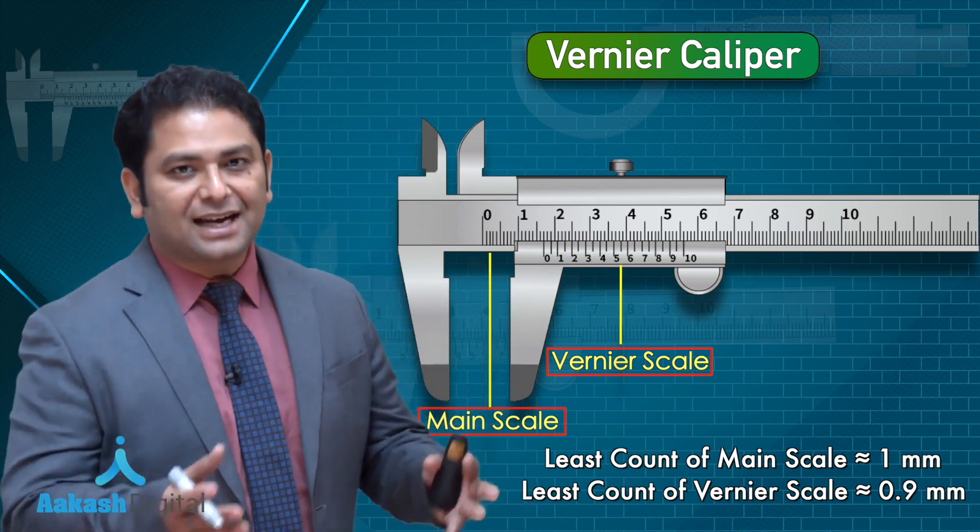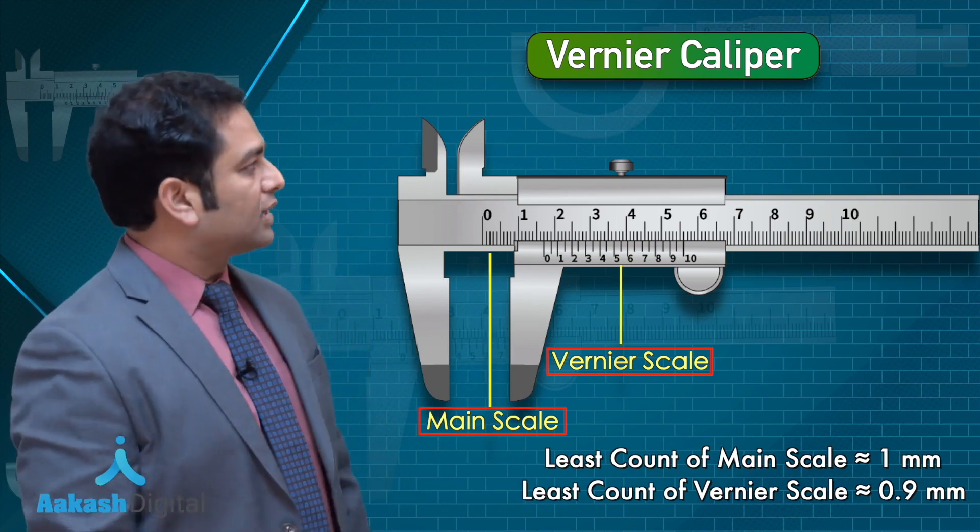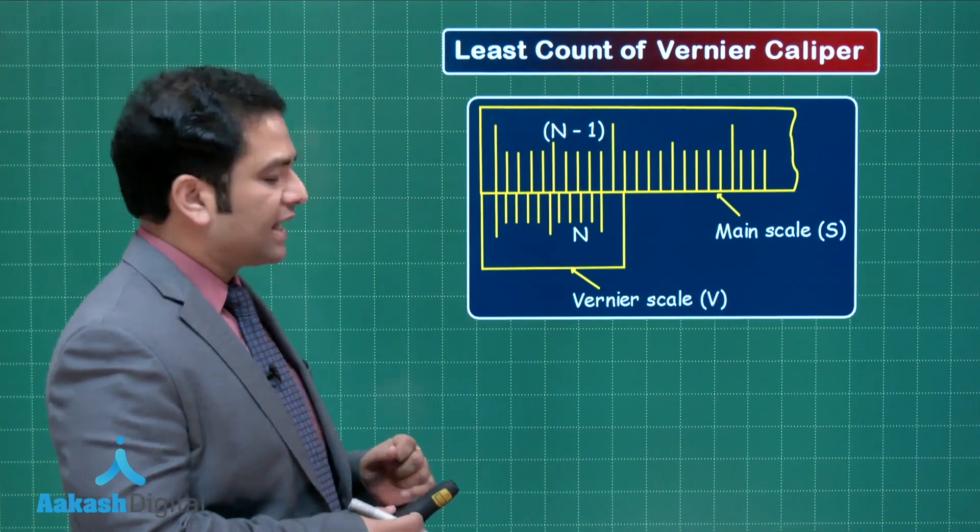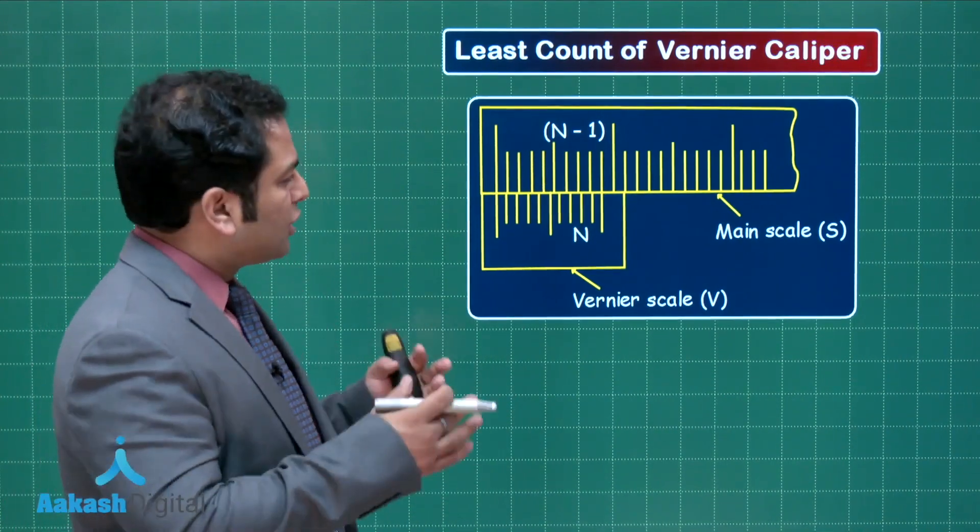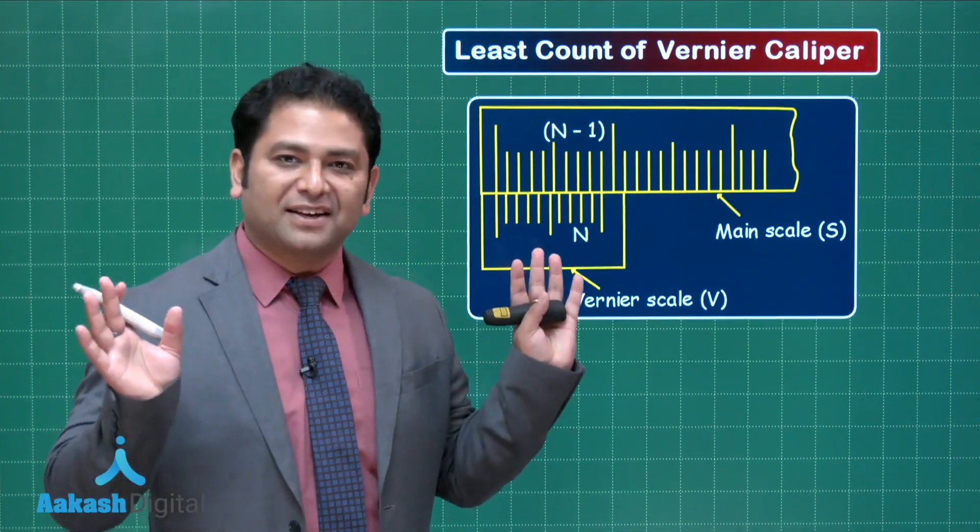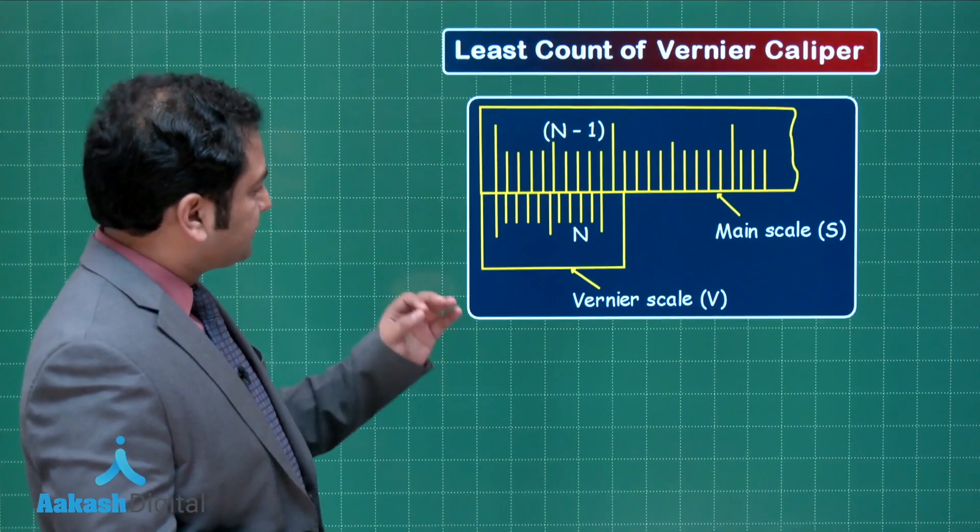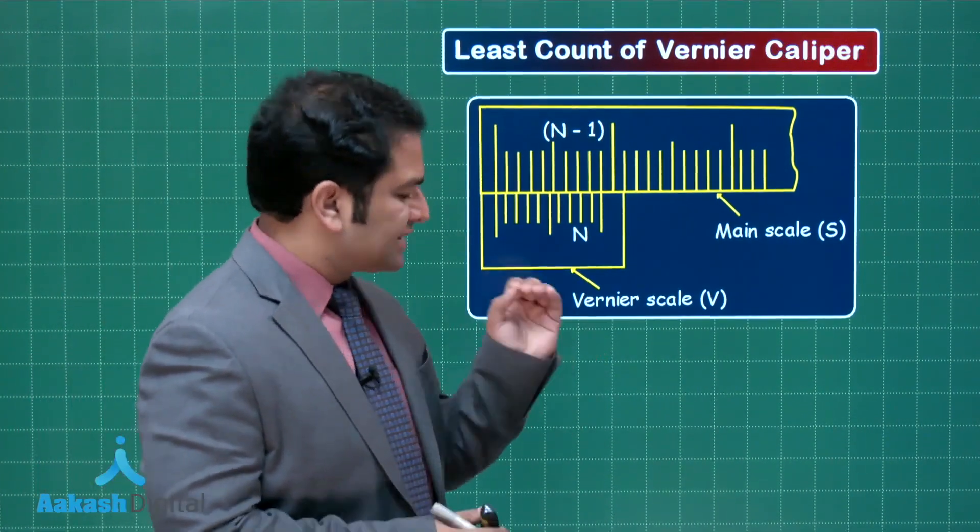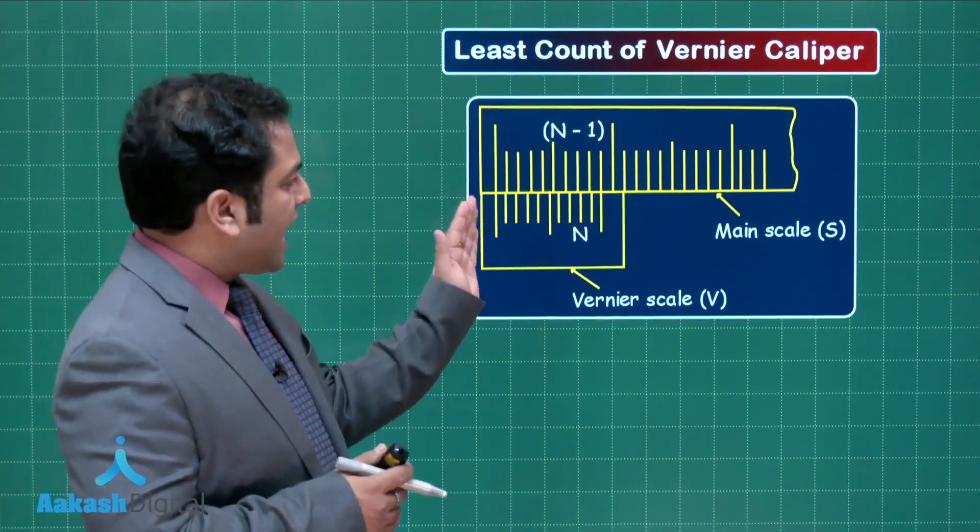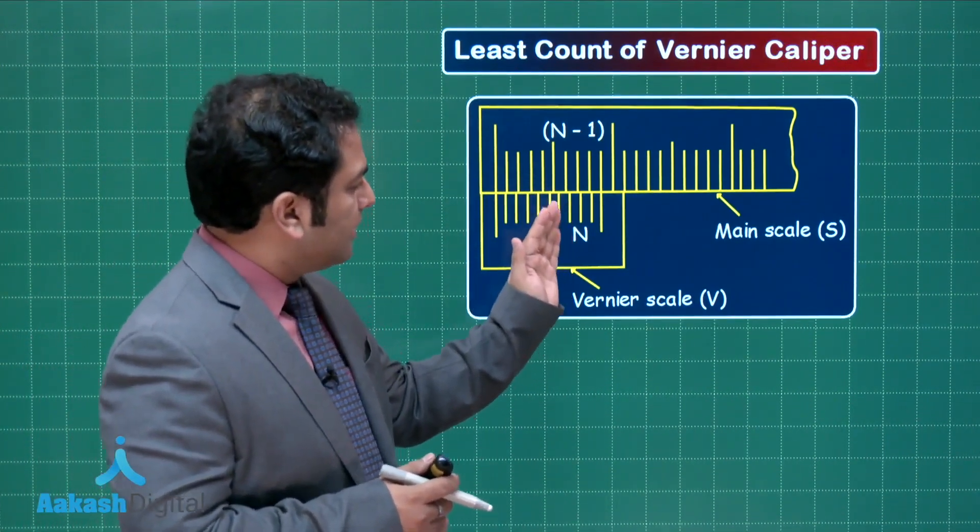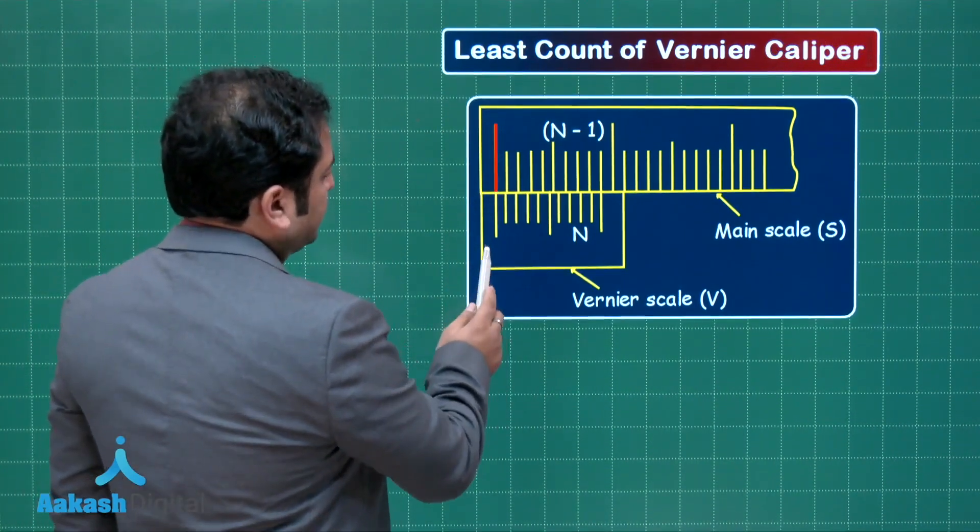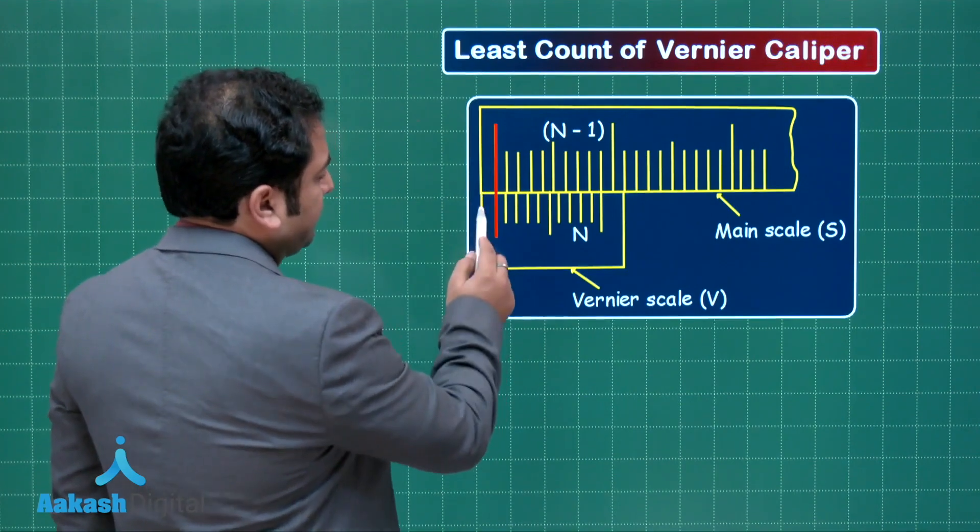Now let us try to see the reading and the least count of that Vernier caliper. To calculate the least count, let me show how a Vernier caliper looks like. Since the Vernier scale is slightly lesser than main scale, the lag keeps on getting added up. Look here—the first zero of the main scale and zero of the Vernier is matching.